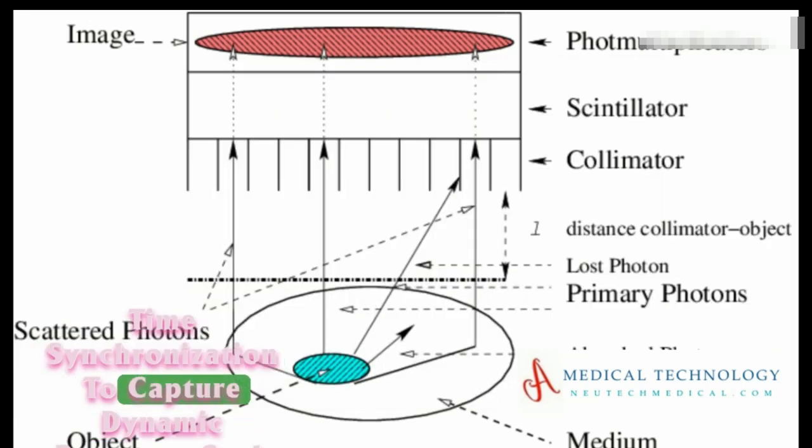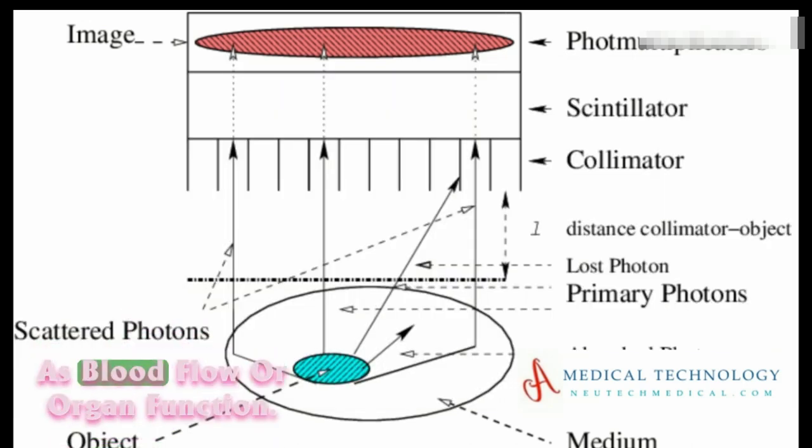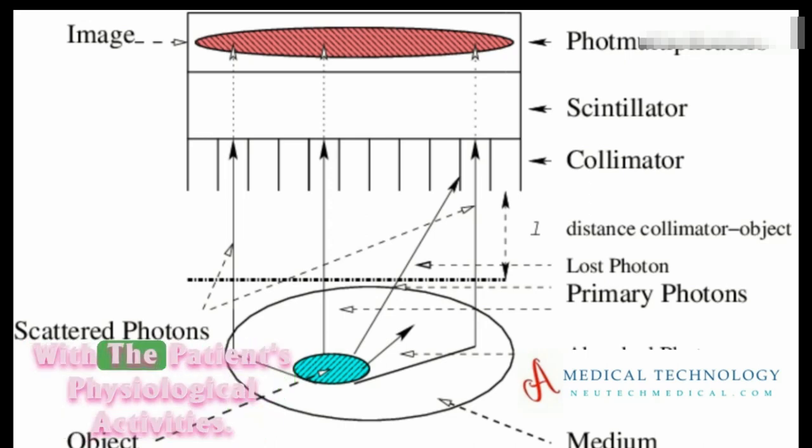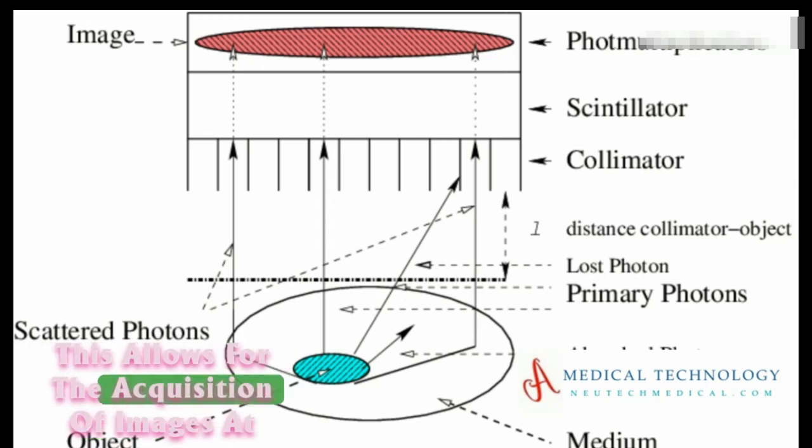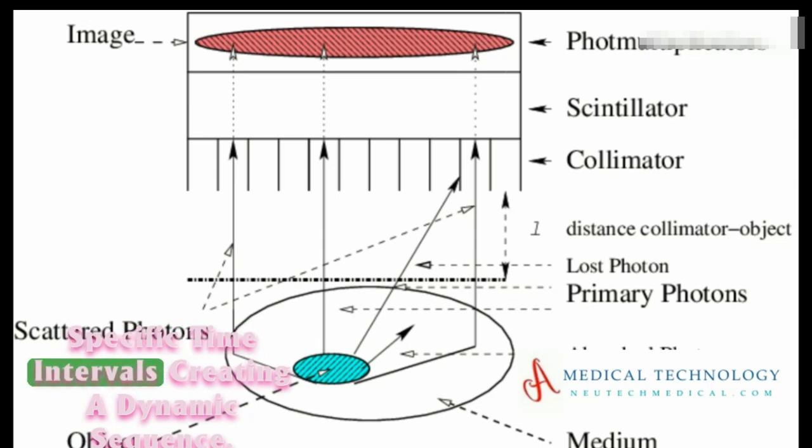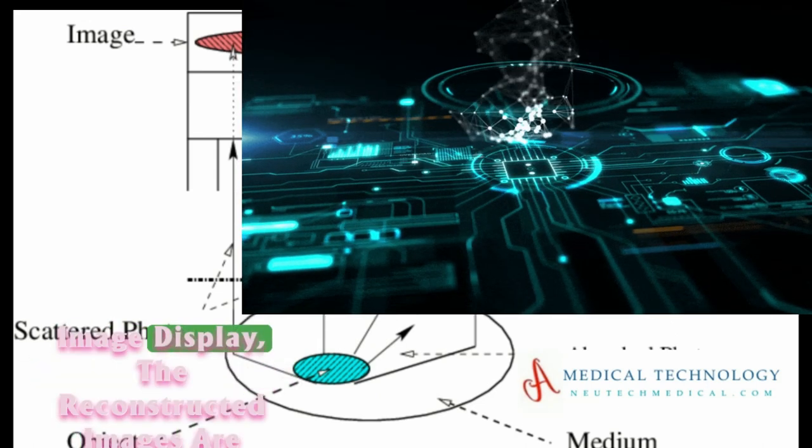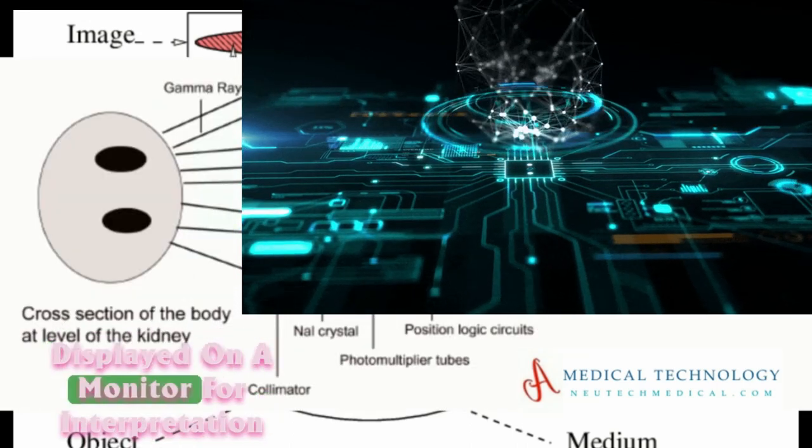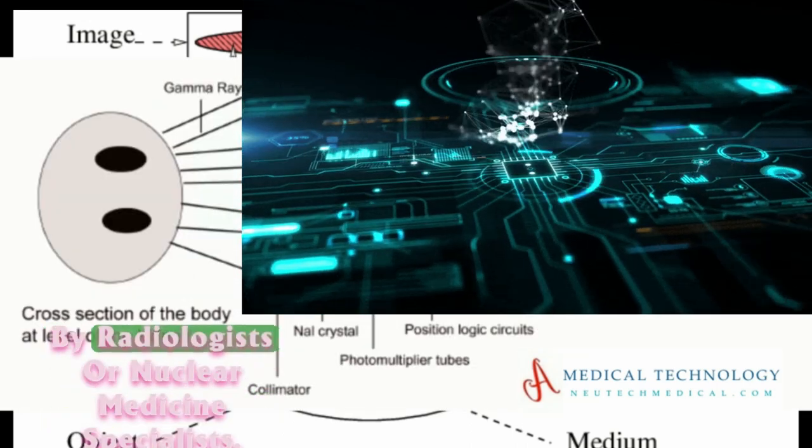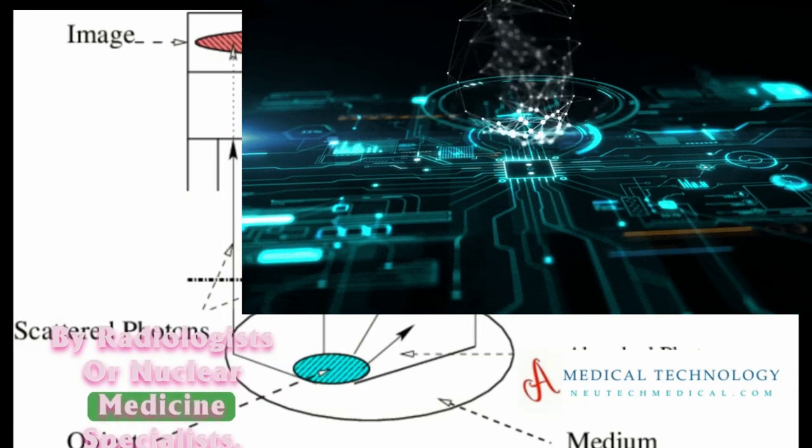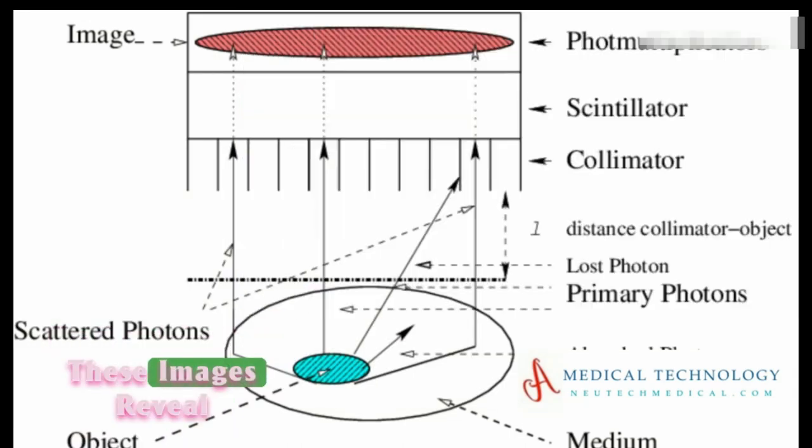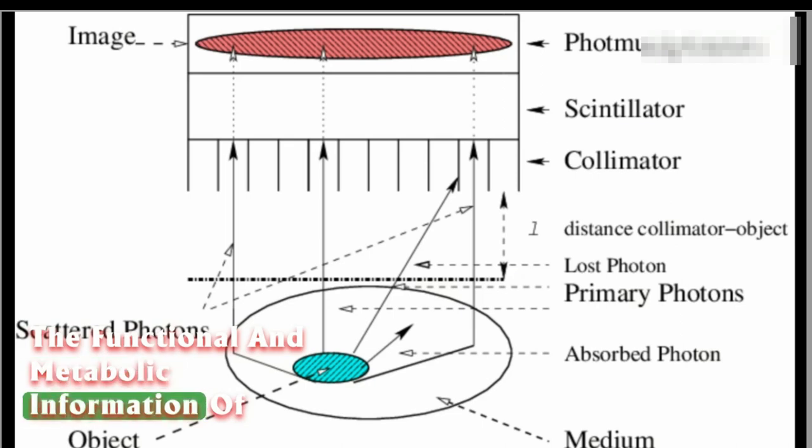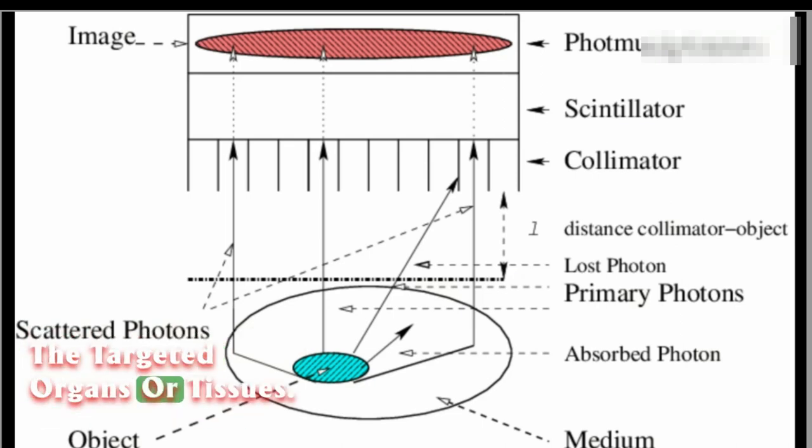Time synchronization: To capture dynamic processes such as blood flow or organ function, the gamma camera is often synchronized with the patient's physiological activities. This allows for the acquisition of images at specific time intervals, creating a dynamic sequence. Image display: The reconstructed images are displayed on a monitor for interpretation by radiologists or nuclear medicine specialists. These images reveal the functional and metabolic information of the targeted organs or tissues.